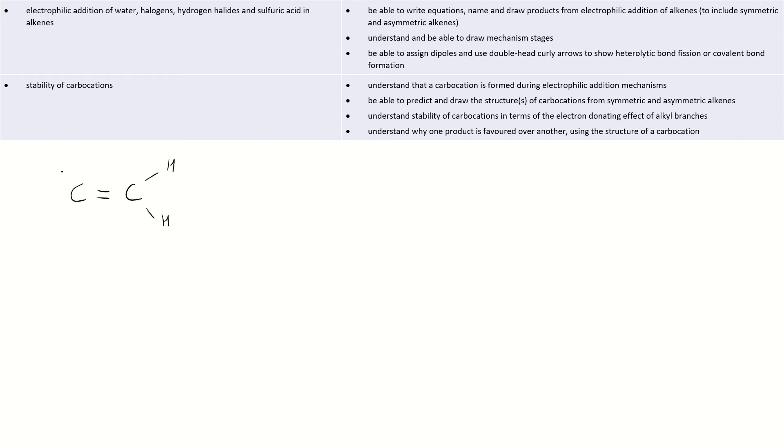We'll start with an example where we pick out a symmetric alkene — these are much easier to look at. So we'll start with ethene and bring in a hydrogen halide, HBr.